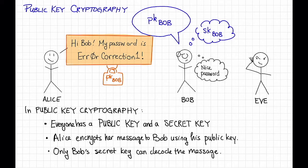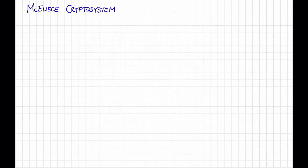So how can we come up with these public-keys and secret-keys, and how can we use them to lock and unlock a message? Here's one way to do that, using linear codes. So this is called the McEliece cryptosystem.